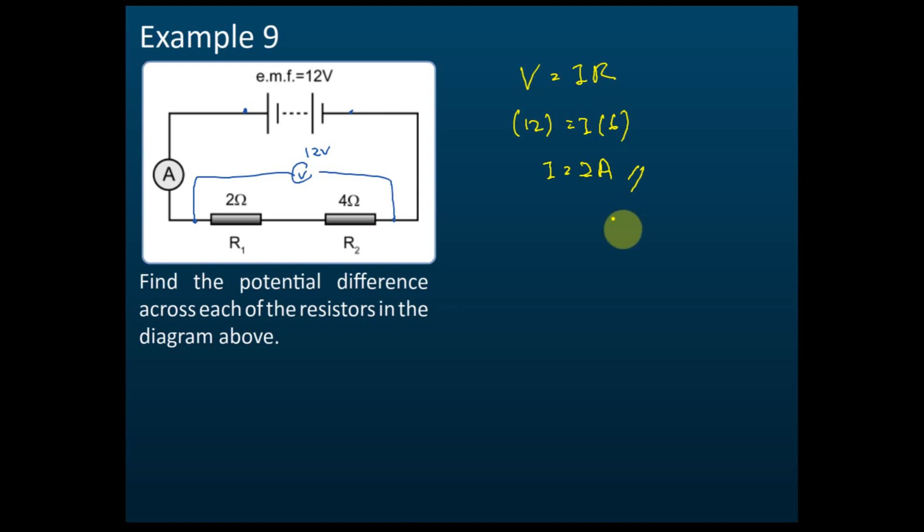Now let's find the potential difference for the first resistor. V1 equals IR1, and the current is 2 ampere, R1 is 2 ohm, so the potential difference is 4 volt. How about V2? The current is still 2 ampere, but R2 equals 4 ohm, therefore it equals 8 volt. So V1 is 4 volt, V2 is 8 volt.